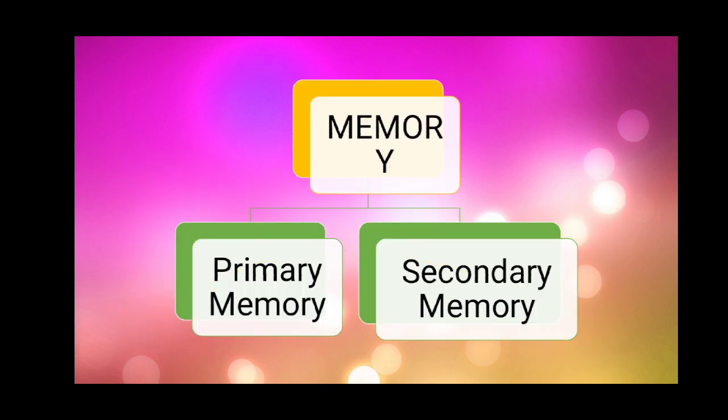Memory is classified into two types. Mainly it is classified into two types: pahla hai primary memory aur second hai secondary memory. Ab primary memory kya hoti hai? Primary memory computer ki main memory hoti hai.